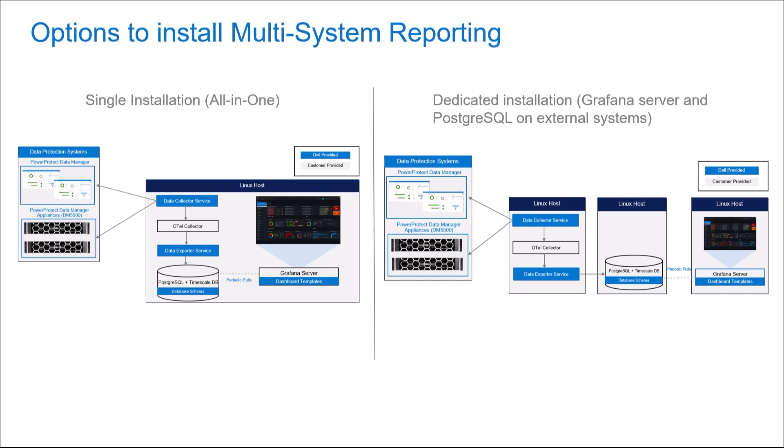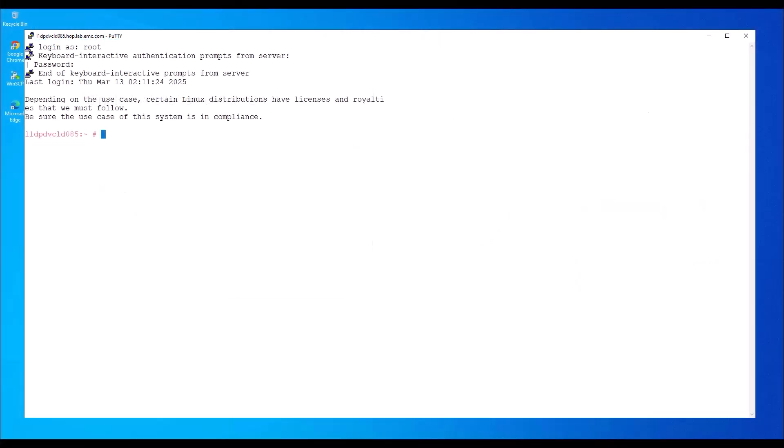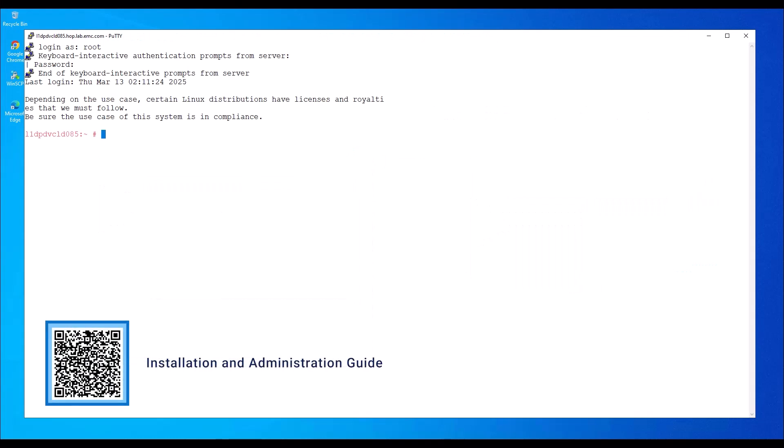For this demo, we'll use the all-in-one installation option to install and configure the multisystem reporting solution and visualize the collected data on the Grafana server dashboards. Before installing the multisystem reporting solution, refer to the prerequisites section in the installation and administration guide.